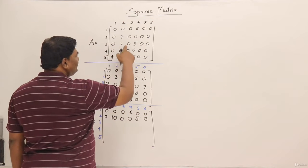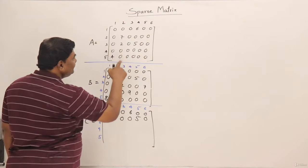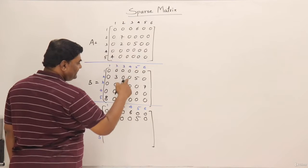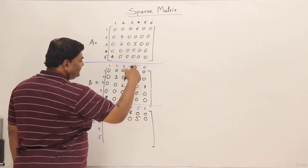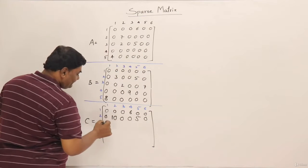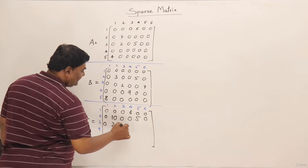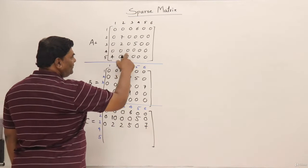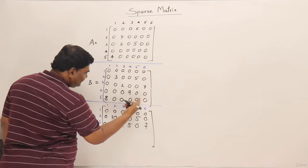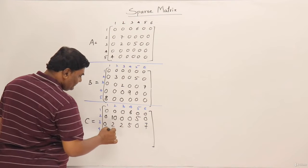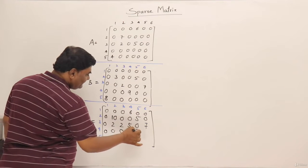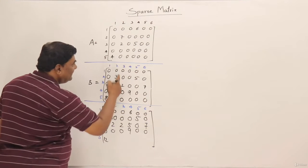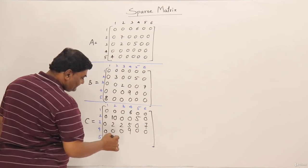Third row: elements are 2 and 5 in matrix A, and 2 in matrix B. So 2 plus 0 is 2, 5 plus 0 is 5, then 0, then 7. The row becomes: 0, 2, 2, 5, 0, 7. Fourth row is all zeros in A, so adding with B we get the same row: 0 0 0 9 0 0. The last row has 4 in A and 8 in B, so 4 plus 8 is 12.